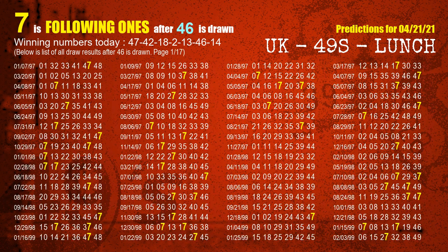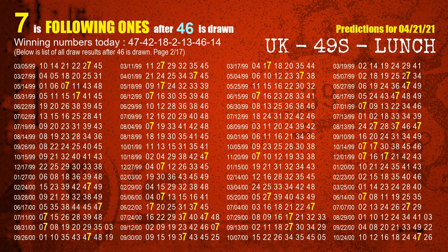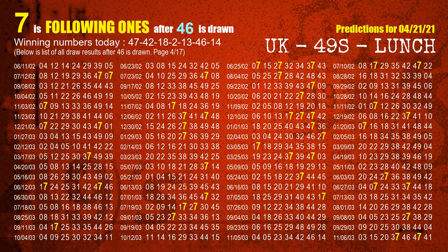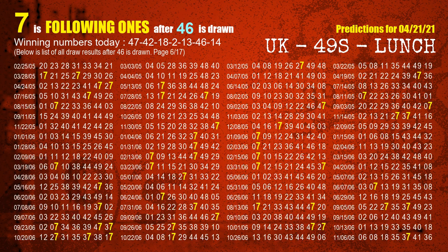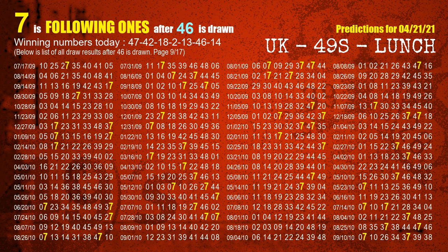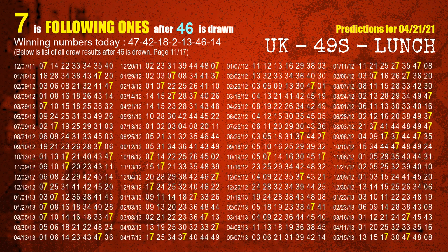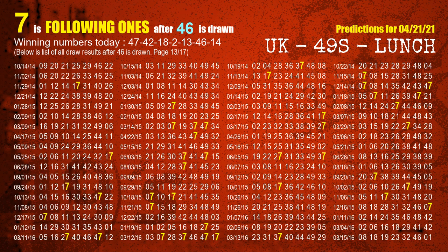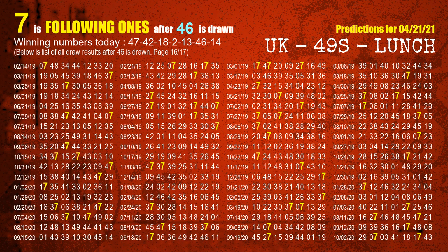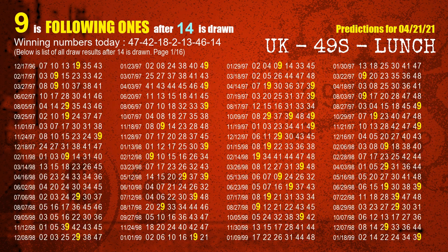The sixth winning number is 46. The most frequently following units digit is 7 when 46 is the winning number in the last draw. The booster winning number is 14. The most frequently following units digit is 9 when 14 is the winning number in the last draw.